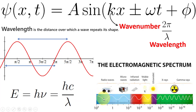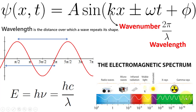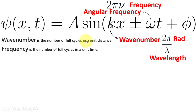In the electromagnetic spectrum, going from radio waves, which are longer wavelengths, through infrared, visible, ultraviolet, X-rays, and gamma rays, the wavelength becomes shorter and shorter. So wavelength is inversely proportional to energy.